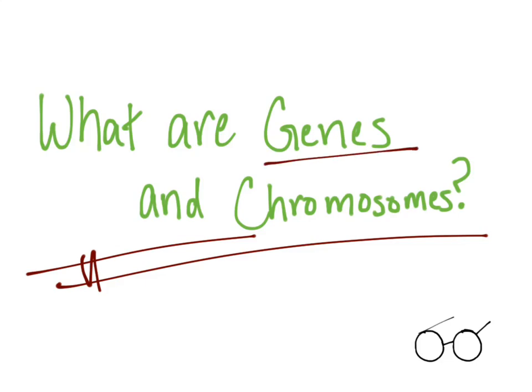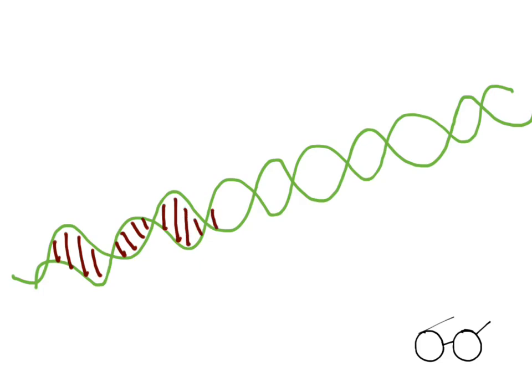As we start off with genes, I'm going to go ahead and draw a picture of DNA, and then I'm going to show you how DNA is put into genes, and how genes are put into chromosomes. I'm going to relate that all into a definition of both genes and chromosomes. So let's go ahead and get started here with the picture of DNA.